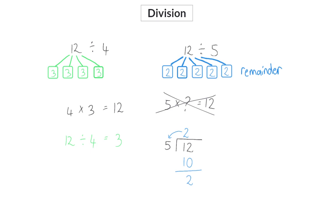So there's a remainder of 2. So, you can write that 12 divided by 5 is 2, with a remainder of 2.